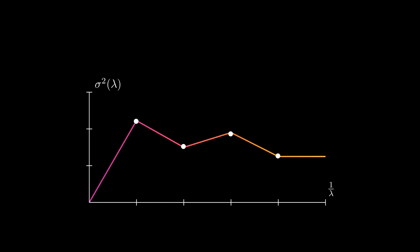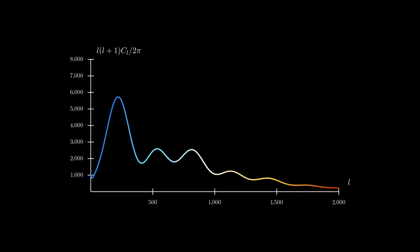The variance as a function of wavelength, or its inverse, is known as a power spectrum. In the context of the CMB then, the power spectrum tells us about the contribution of features of various wavelengths in producing the overall map that we observe.